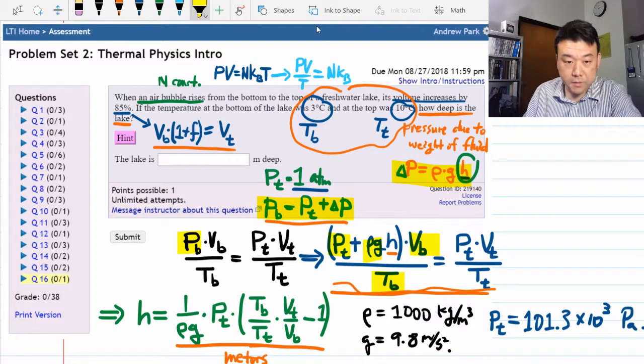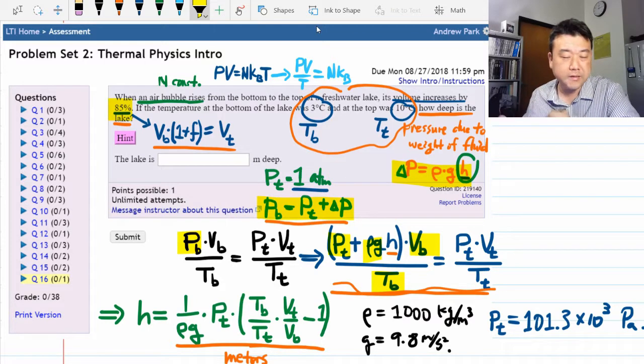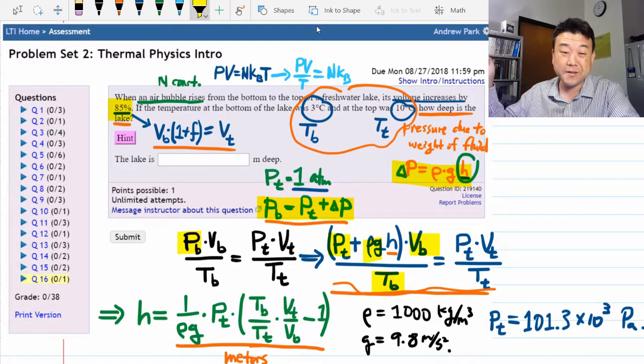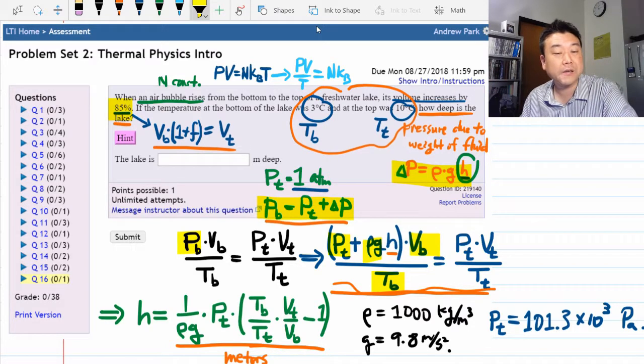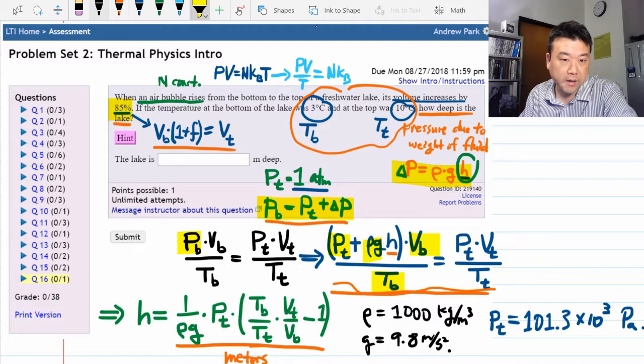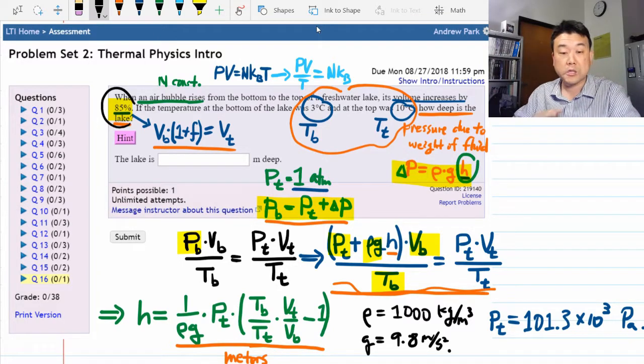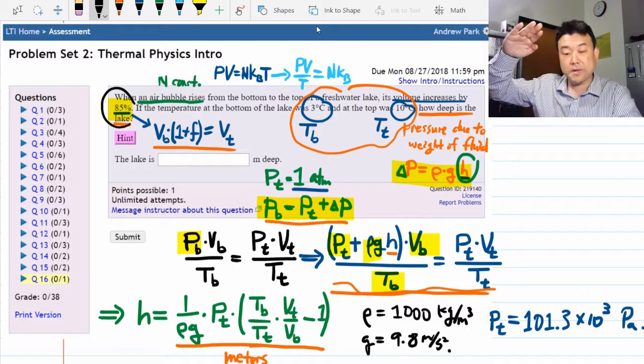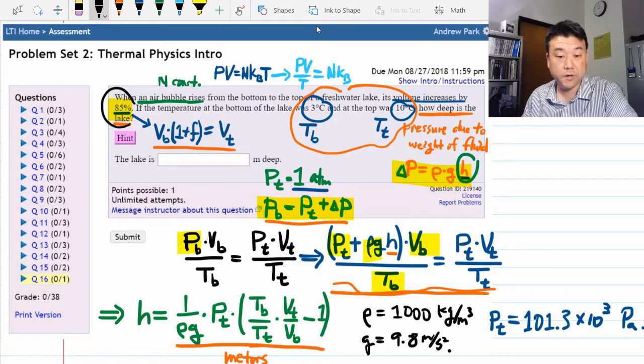When you plug in numbers, based on what I see here, you should get a number that's between 5 and 10 meters. If you get a number bigger than 10 meters, then something's definitely wrong. Because based on this number, I can quickly calculate that the pressure at the bottom of the lake is close to 2 atm, but not quite there. And about 10 meters of depth of water gives you about an atmosphere of pressure.